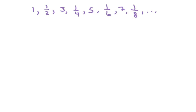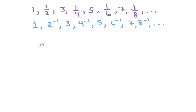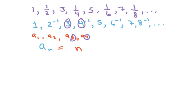This one looks like it's not alternating, but you can write it as 1, 2^(-1), 3, 4^(-1), 5, 6^(-1), 7, 8^(-1). So the exponent is alternating from positive 1 to negative, positive 1 to negative, and so forth. That means we use the alternating term (-1)^(n-1), and that would be your answer.